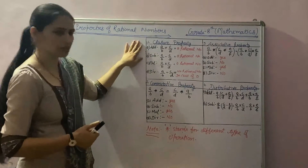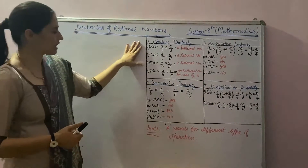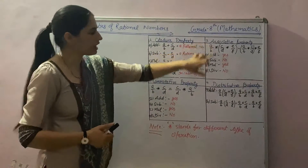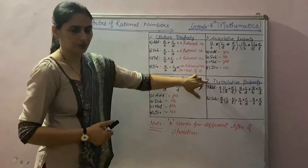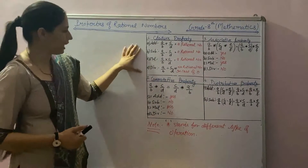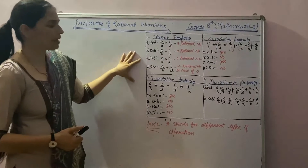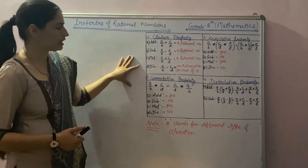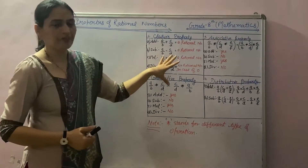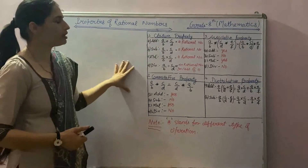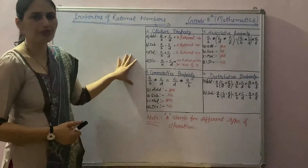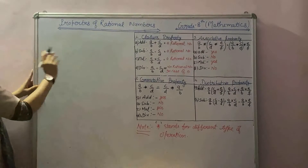The first property is closure property. The second is commutative property. The third property is associative. And the fourth property is distributive. In these properties, when we add, subtract, multiply and divide rational numbers, we get another rational number. These properties hold with some binary operations for rational numbers, except in a few cases. Let's take some examples.